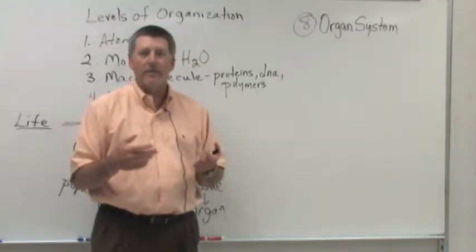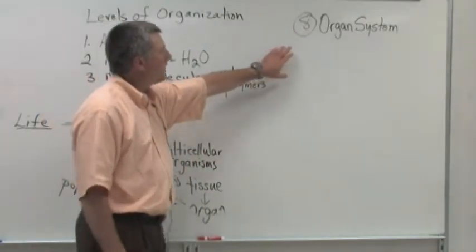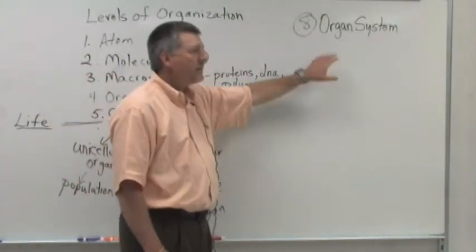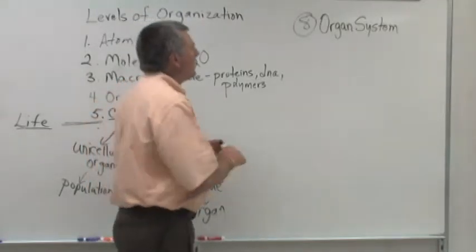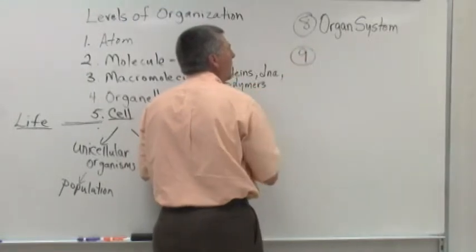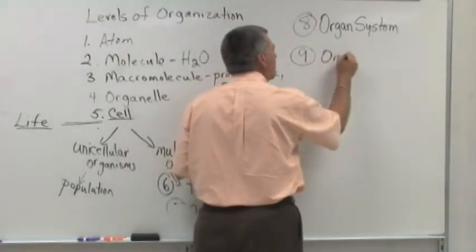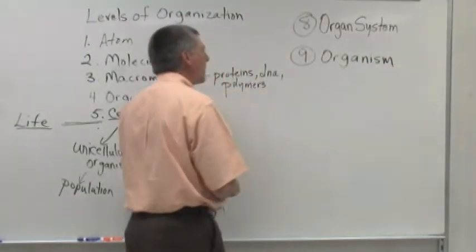Muscular system, nervous system, endocrine system, lymphatic system. There are many different types of organ systems within a human. So we go from organ system to the organism level of organization.